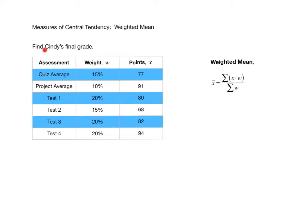We want to find Cindy's final grade. The grade is broken into quiz average, project average, test one, test two, test three, and test four — just like our class. These are the weights for each of those: 15% of the grade is quizzes, 10% project, 20% for test one, and so on and so forth.